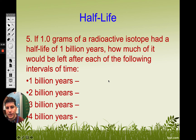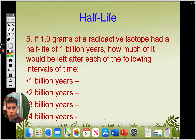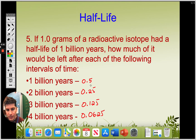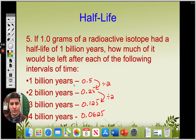Here's an easy example: if one gram of an isotope had a half-life of a billion years, how much should be left after each interval? After one billion years, we would have 0.5 grams. After two billion years, 0.25 grams. After three billion years, you take 0.25 and divide it by two to get 0.125. After four billion years, we would have 0.0625 grams. Each time, all you're doing is taking the number above and dividing it by two — cutting it in half.